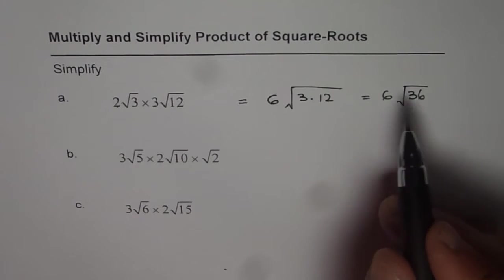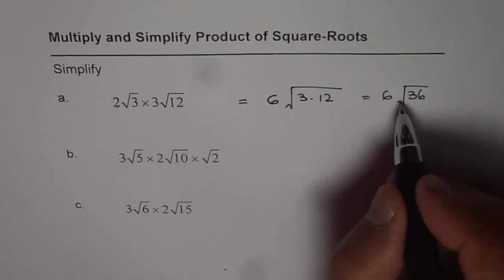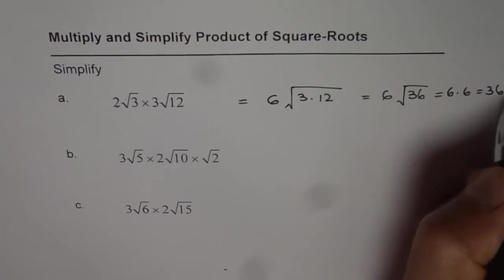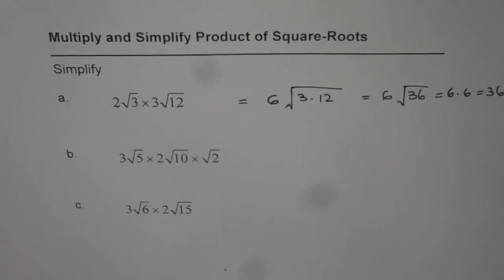You know 36 is 6 squared, correct? And therefore you get this as 6 times 6 which is also 36. So that is how you can get your answer. So that is one way of doing it.